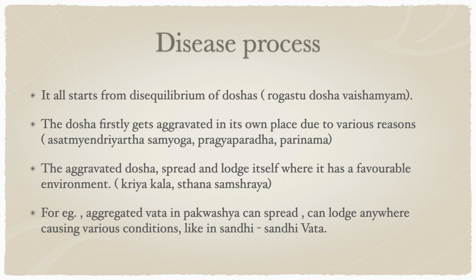Whenever there is a vata-kala — for example, now it is varsha ritu, where vata increases — all conditions of vata worsen for a person who is already suffering. The aggravated vata troubles that particular weak structure more. The weakness arises because jvara has made that particular srotas weak, making it a favorable environment for the aggravated doshas to act.